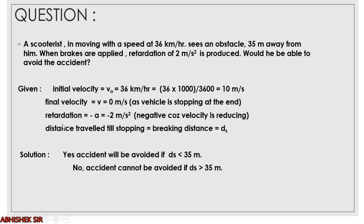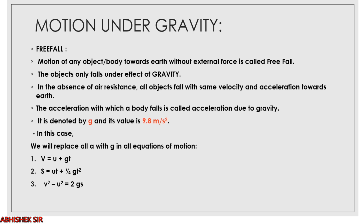Final velocity is zero as the vehicle is stopping. Retardation is −2 m/s². The braking distance is ds. Applying the formula: if ds comes out to be less than 35 meters, the scooterist will stop before the obstacle and the accident will be avoided. If the braking distance is more than or equal to 35 meters, the accident cannot be avoided. Solve it and tell us the answer in the comment section.